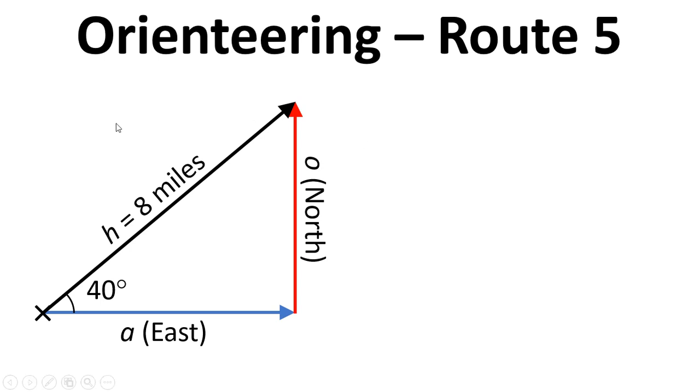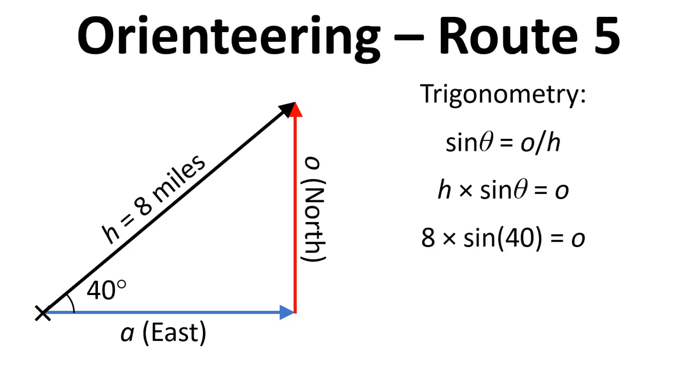And in this example again we need to draw a diagram and we've got the angle this time given as 40 degrees and the distance is 8 miles. So using trigonometry, we can go back to sine theta. If we multiply both sides by h, we get h times sine theta equals opposite. So if we put the numbers in, we can see that we're 5.14 miles north and now we need to think about east.